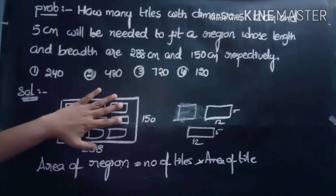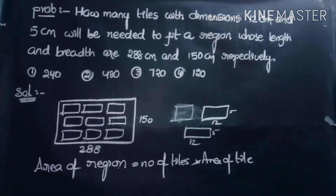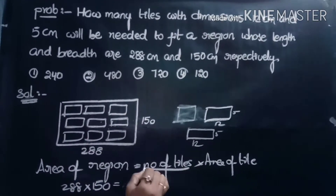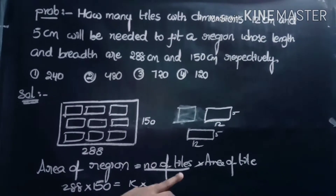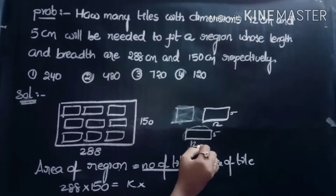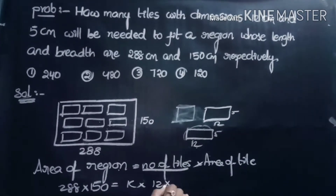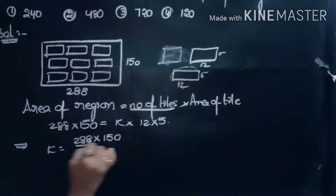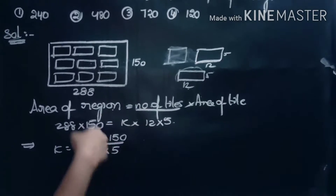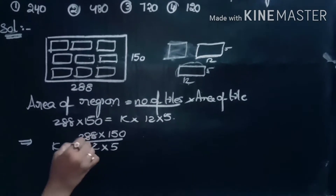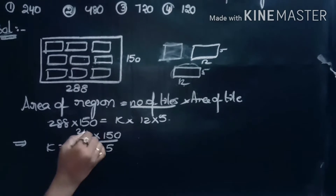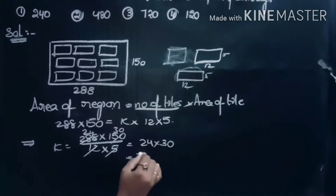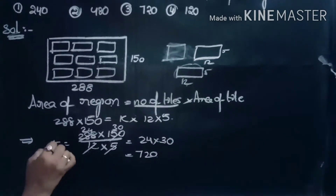We don't know the number of tiles, so we take that as K. K into area of the tile, where each tile's length and breadth is 12 into 5. Therefore, K = (288 × 150) / (12 × 5). Now, 12 cancels 24 times and 5 cancels 30 times, giving 24 into 30 = 720. Therefore, the number of tiles required is equal to 720.